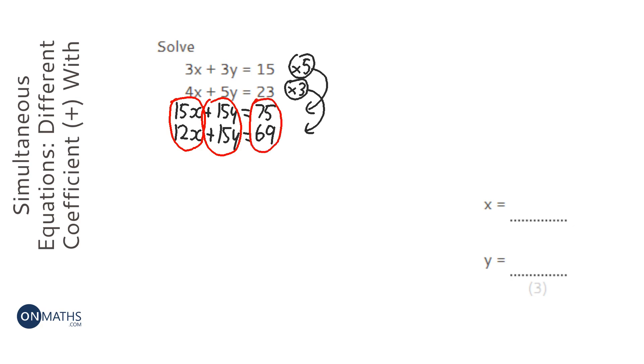And the rule for simultaneous equations is if you have the same signs, we subtract. Different signs we add. Here we have positive 15y and positive 15y, so they're the same, so we're going to subtract.